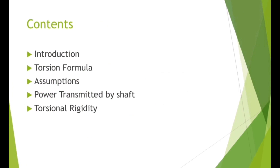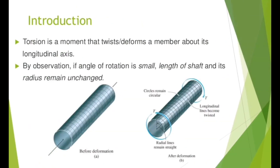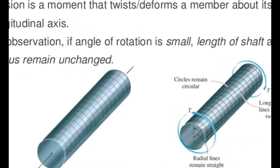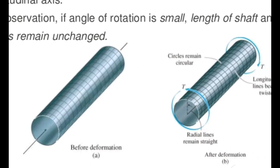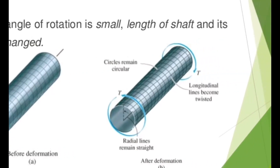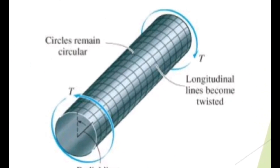Torsion is a moment that twists or deforms a member about its longitudinal axis. By observation, if the angle of rotation is small, the length of the shaft and its radius remain unchanged. After deformation, the radial lines and circles remain the same, but the longitudinal lines become twisted, as shown in the diagram.